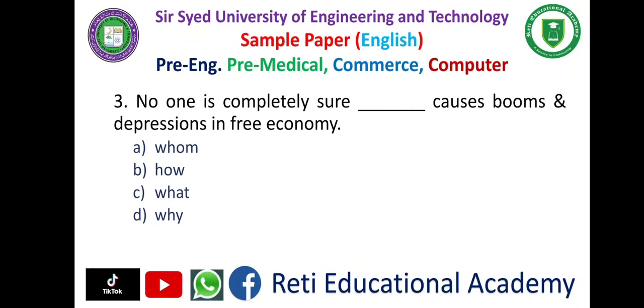Question number three. 'No one is completely sure dash causes booms and depressions in free economy.' A. Home. B. How. C. What. D. Why. And the correct answer is...